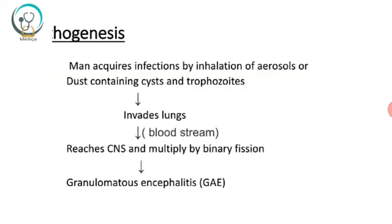In pathogenesis, humans acquire infection by inhalation of aerosols or dust containing cysts and trophozoites. It invades the lungs, and through the bloodstream reaches the CNS, where it multiplies by binary fission and causes granulomatous amoebic encephalitis. Note that unlike Naegleria fowleri — which reaches the CNS through the olfactory nerve — Acanthamoeba reaches the CNS through the bloodstream.